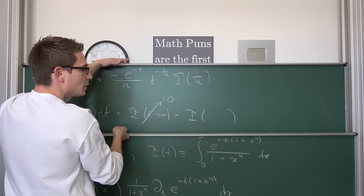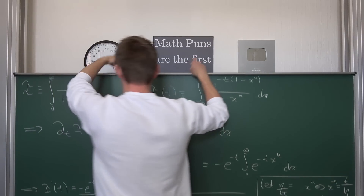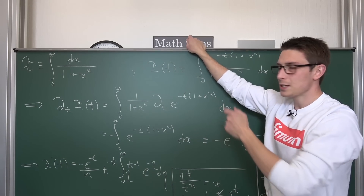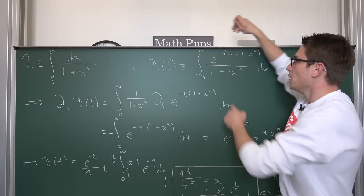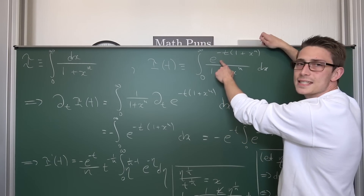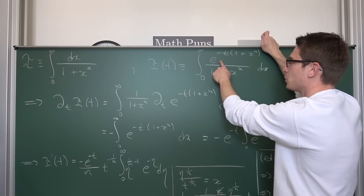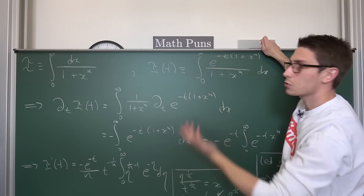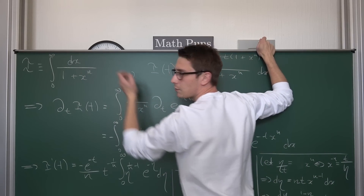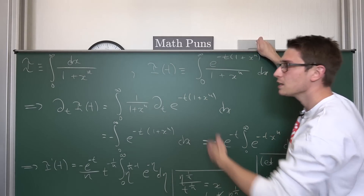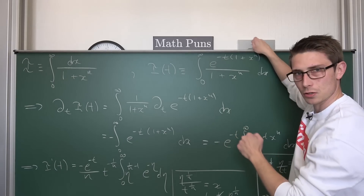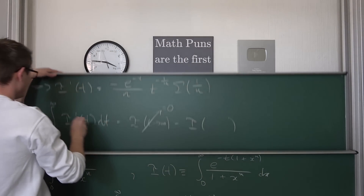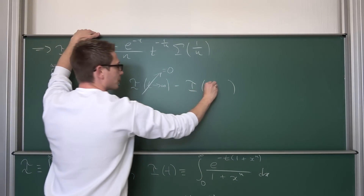To recover our original integral, we just set t equal to zero: e to the zero power gives us 1, which is exactly the numerator we have in our original integral, giving us the solution. So our lower bound is going to be zero. This is basically everything you need to know about this step.